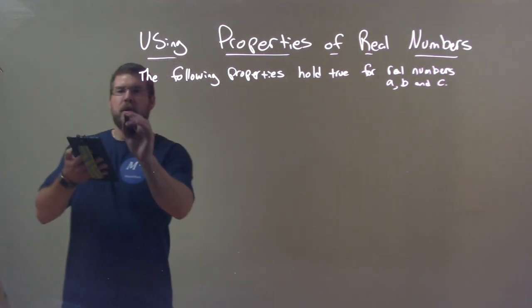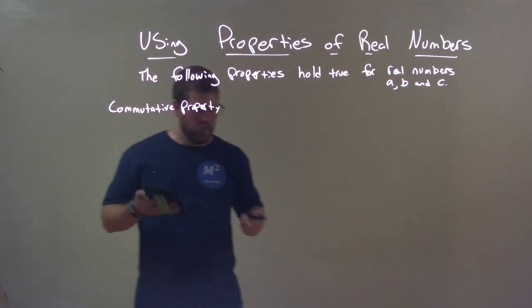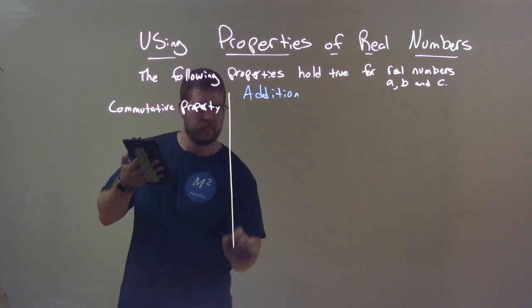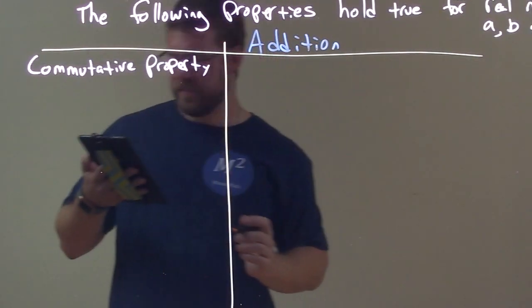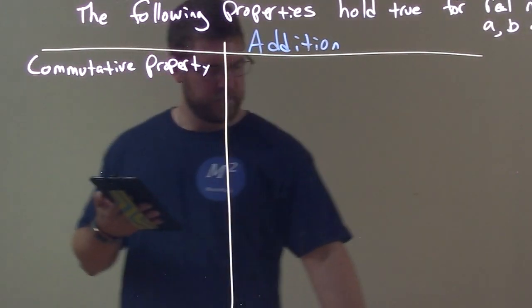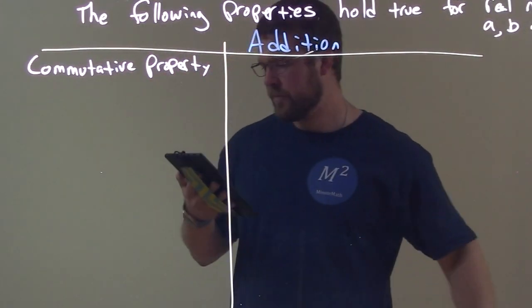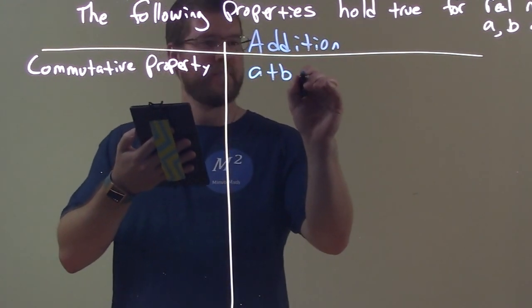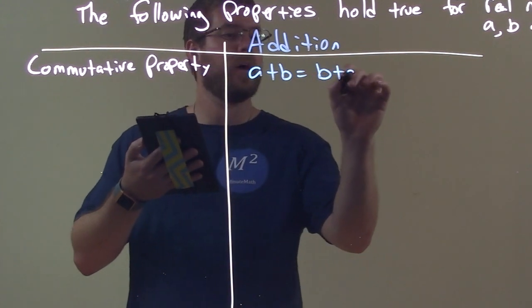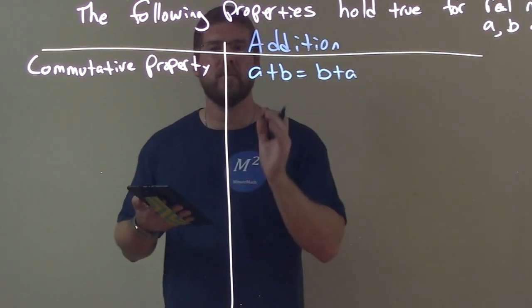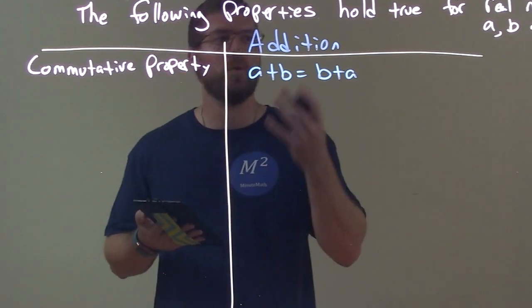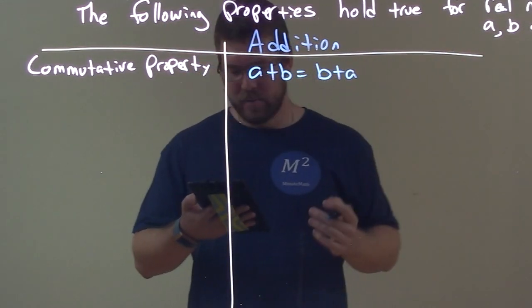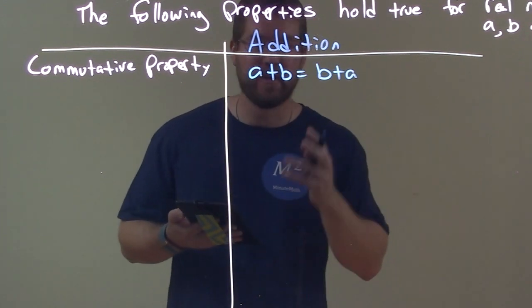Our first one here, the commutative property — with addition: A plus B equals B plus A. The commutative property states that it really doesn't matter the order when you add two real numbers. A plus B is the same thing as B plus A.